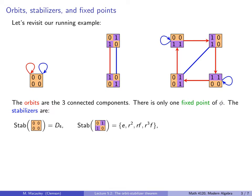The stabilizer of the 0010 1 square: it's the identity, R squared, RF, and FR which is R³F — so there are four elements that fix this. And the same four elements fix the other checkerboard square; you can see that by symmetry.